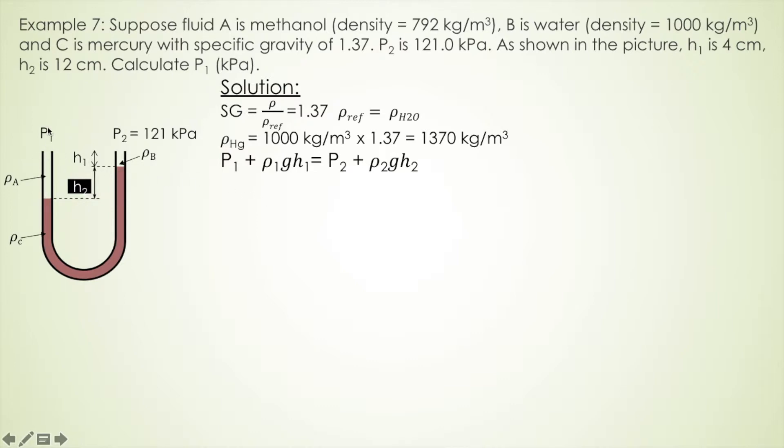In this case, we are on the left, we have P1 plus the density of methanol G H1. Well, we can find out the deflection of methanol is H1 plus H2 in this case, and it's equal to mercury, that is manometer liquid, and mercury times gravity times the mercury deflection plus the pressure caused by water, and density of water times gravity times the deflection of water.